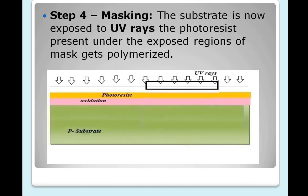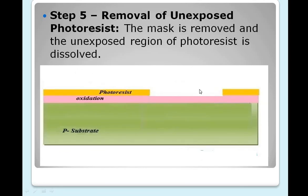The fourth step: you have to expose it to UV light for polymerization — that is, hardening. The mask is laid over here; only the masked parts become softened, while the exposed part becomes hardened. The fifth step is removal of the unexposed photoresist layer — the mask is removed and the unexposed region of your photoresist layer will be dissolved.